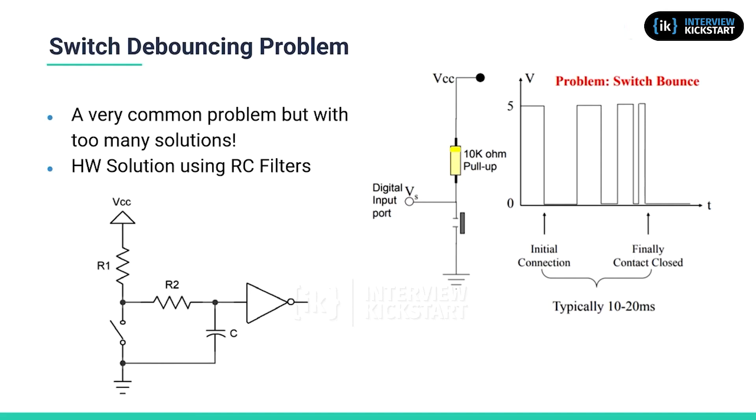First of all, knowing whether it's a 0 or 1 is an issue. The other issue is that if it's connected to an interrupt line, it can generate multiple interrupts and cause confusion to the system.